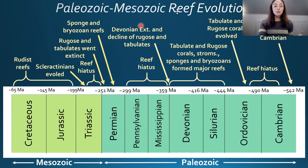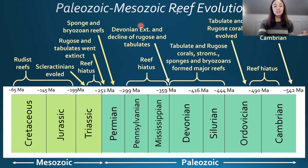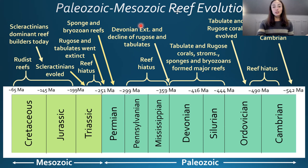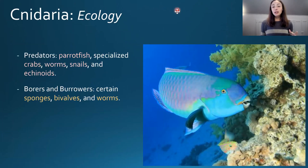Scleractinian corals then evolved — likely from a calcified sea anemone with no prior fossil record — and started building reefs again in the Mesozoic. Rudists, a type of mollusk, dominated reef building through the rest of the Mesozoic until going extinct at the end of the Cretaceous. Scleractinians then became and remain the dominant reef builders through the Cenozoic to today.